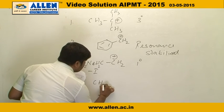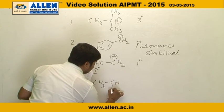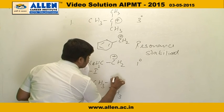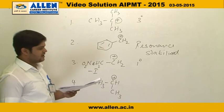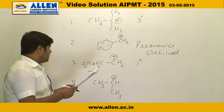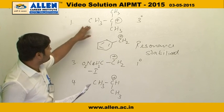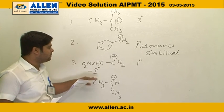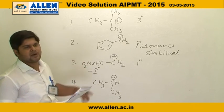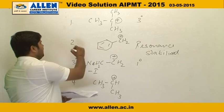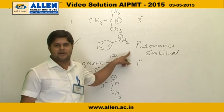The last carbonium ion formed is a secondary carbonium ion with two plus I effects. Looking at the different carbonium ion forms and their structures, the most stable carbonium ion will be the second one, because it is resonance stabilized.